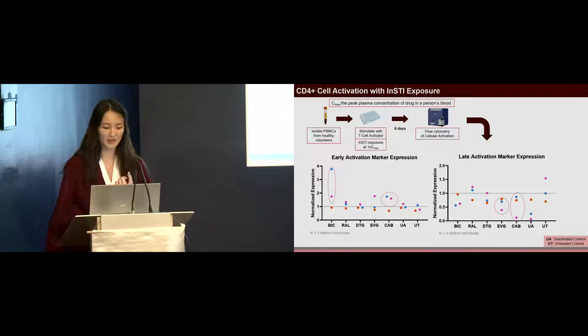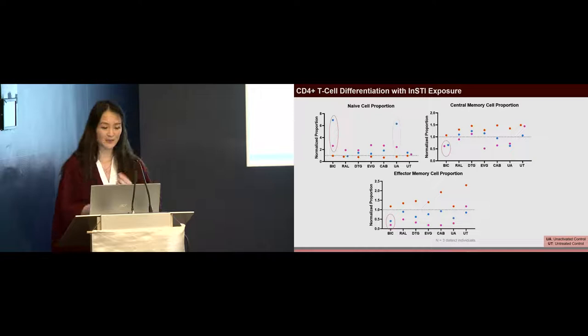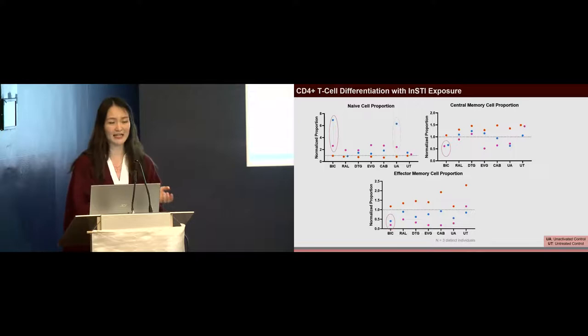When we look at T-cell differentiation with INSTI exposure, we see that with BIC treatment, the cells are appearing not to differentiate away from the naive compartment into the central and effector memory compartment. We can see an elevated proportion of naive cells with BIC treatments, and a decreased level of central memory and effector memory cells within the two individuals. However, this is not seen with all the biological replicates, but this was a preliminary exploratory experiment.